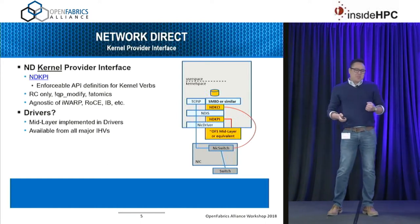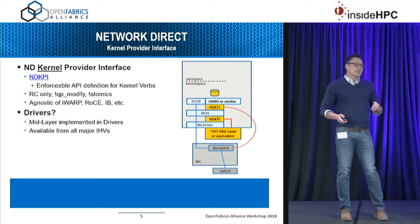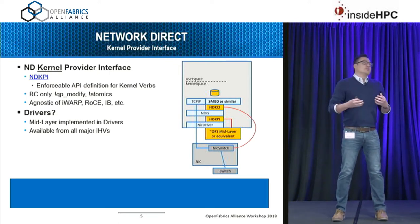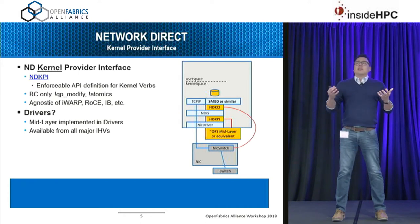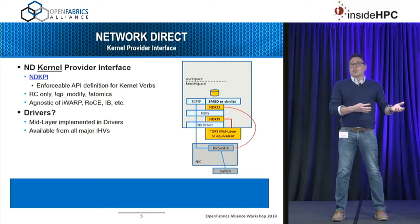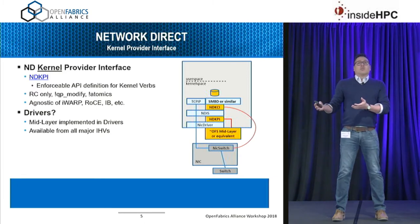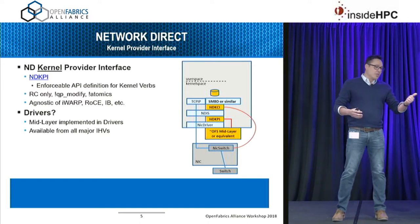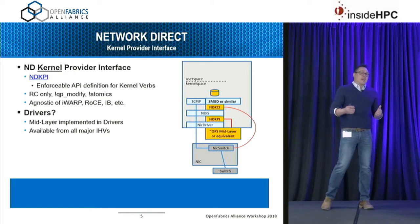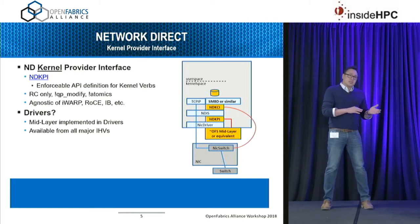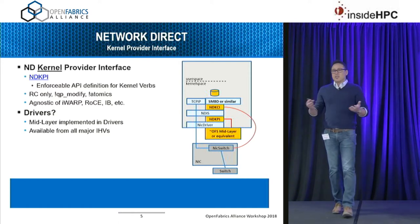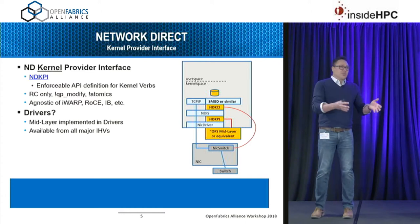One big difference between how Linux and Windows consume RDMA is that in Windows, the OFS mid-layer — all that control logic in the kernel for Linux — isn't in the kernel for Windows. It's inside the IHV's device driver. That gives more flexibility if there's an issue, but the con is that if you have multiple NICs across the ecosystem, they each have their own implementation.